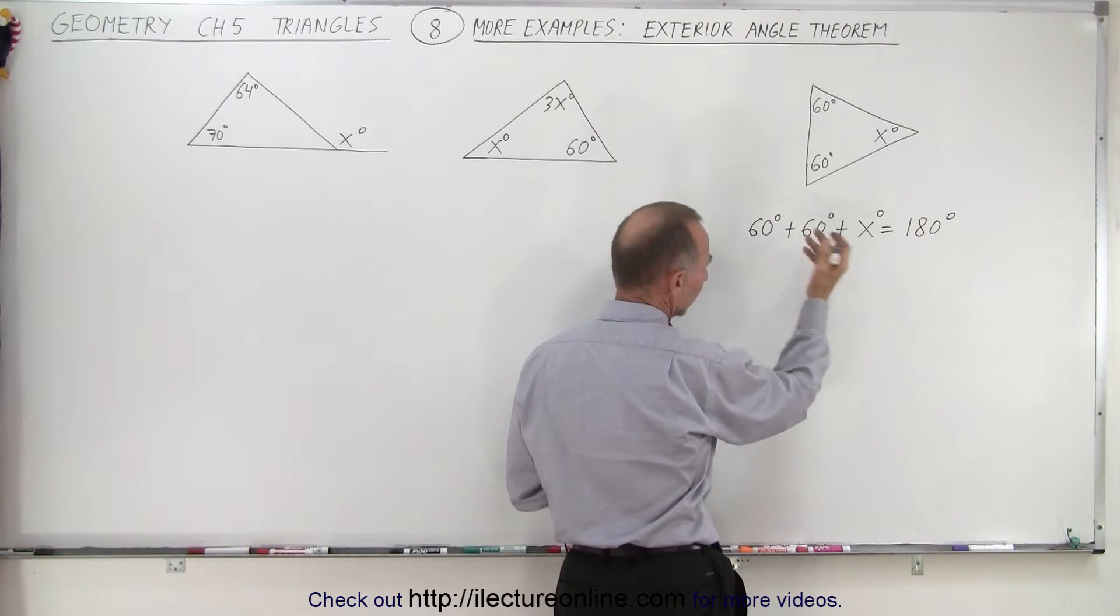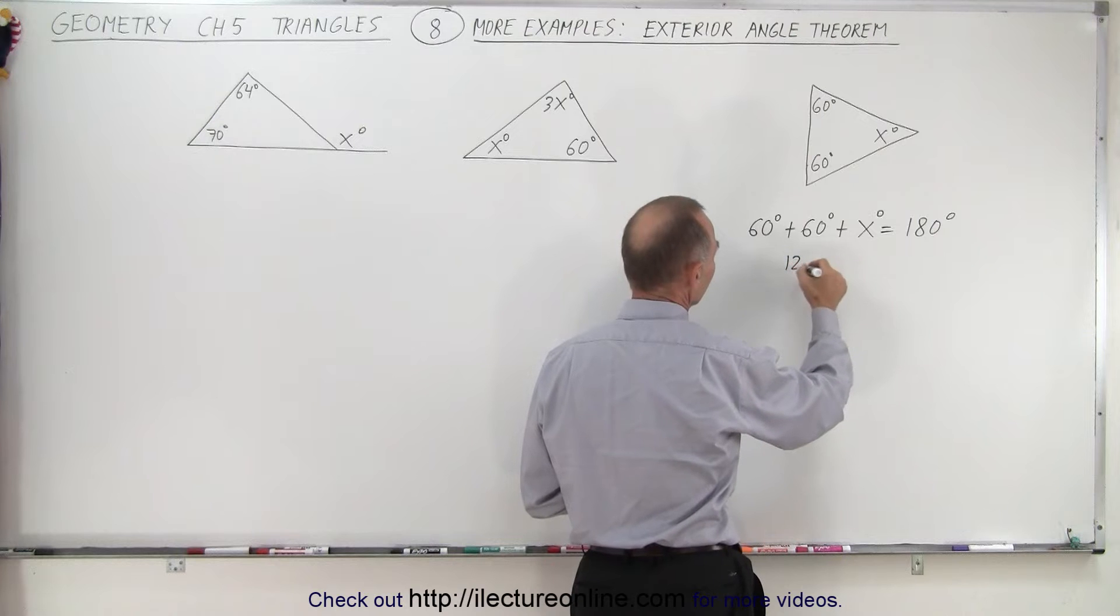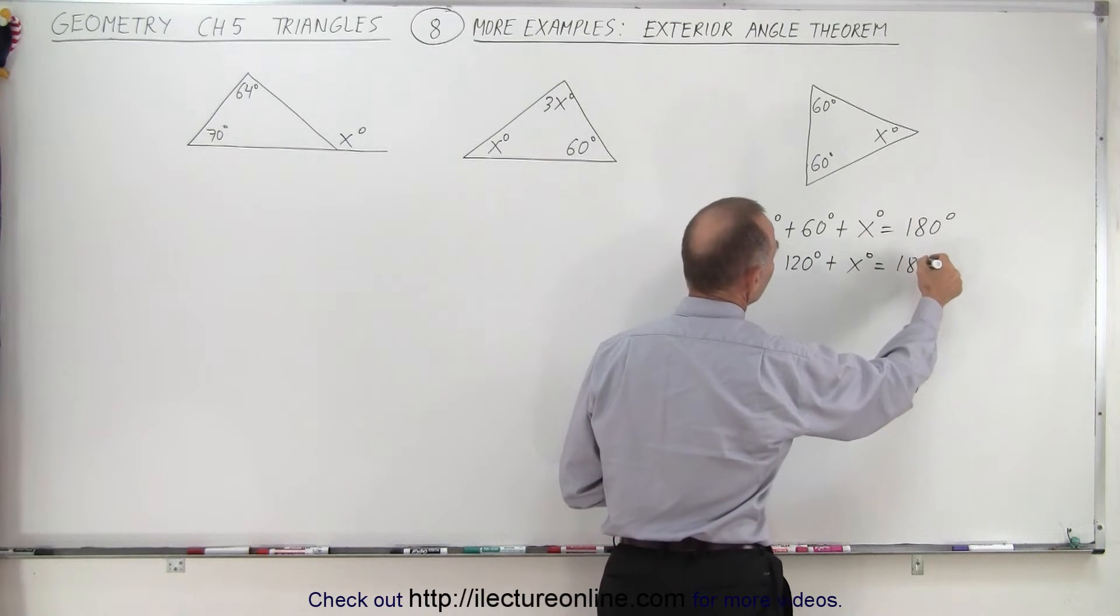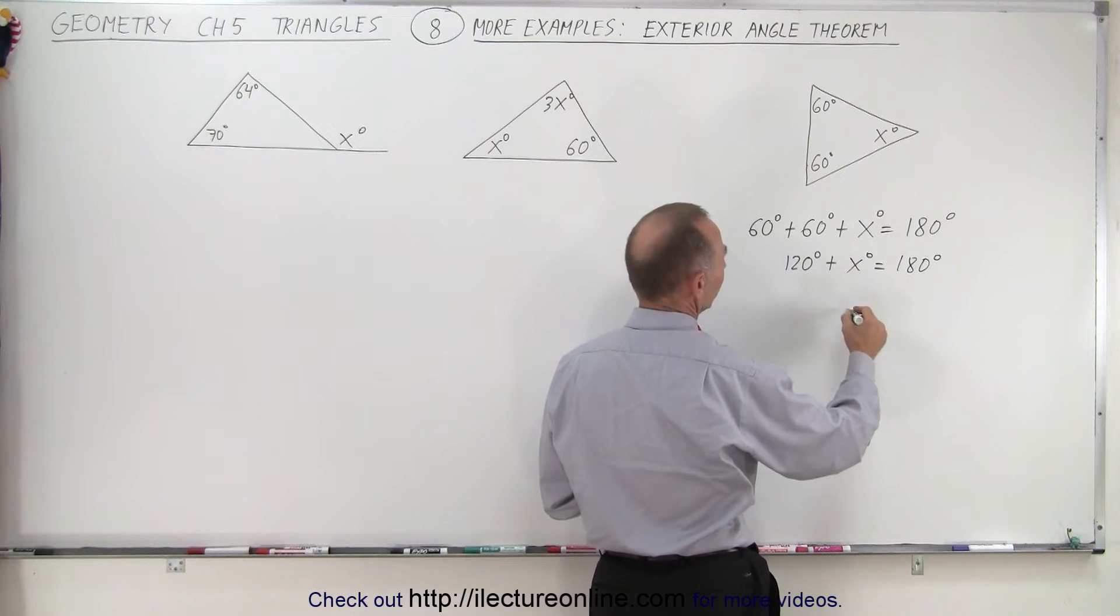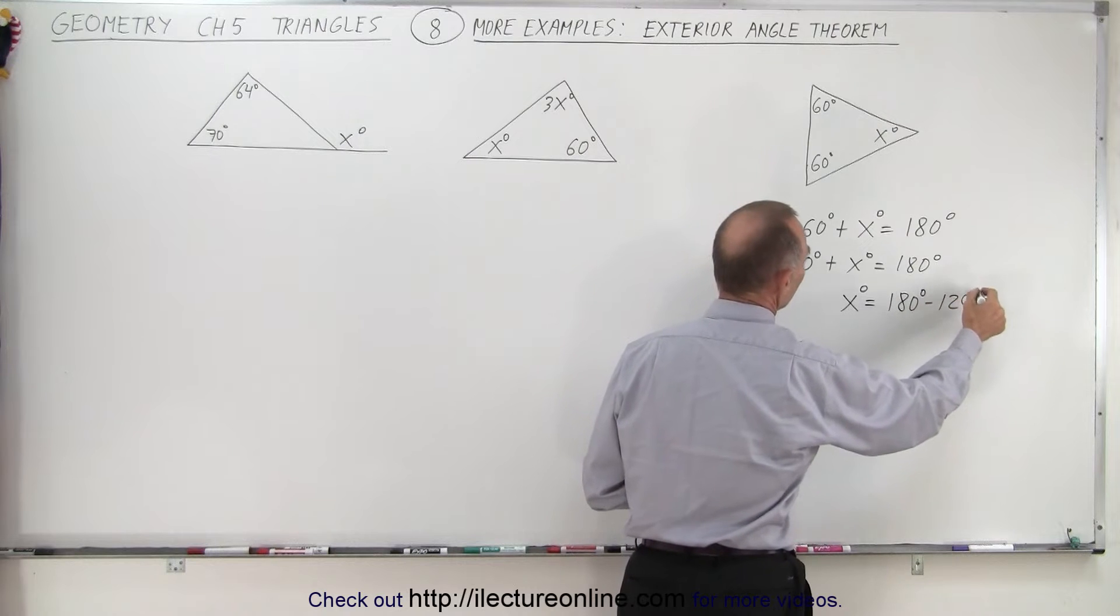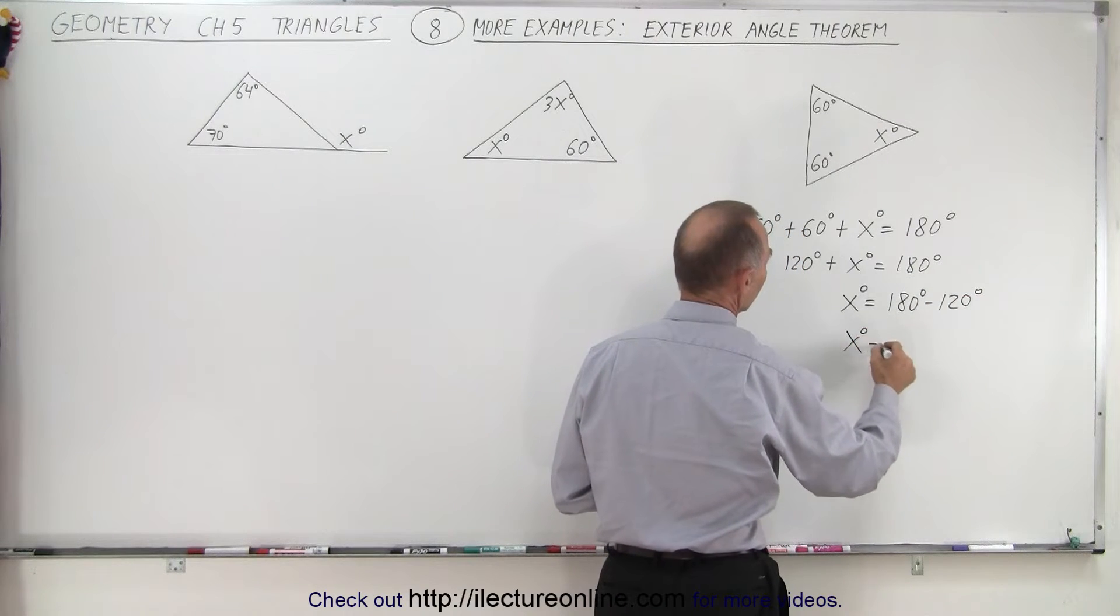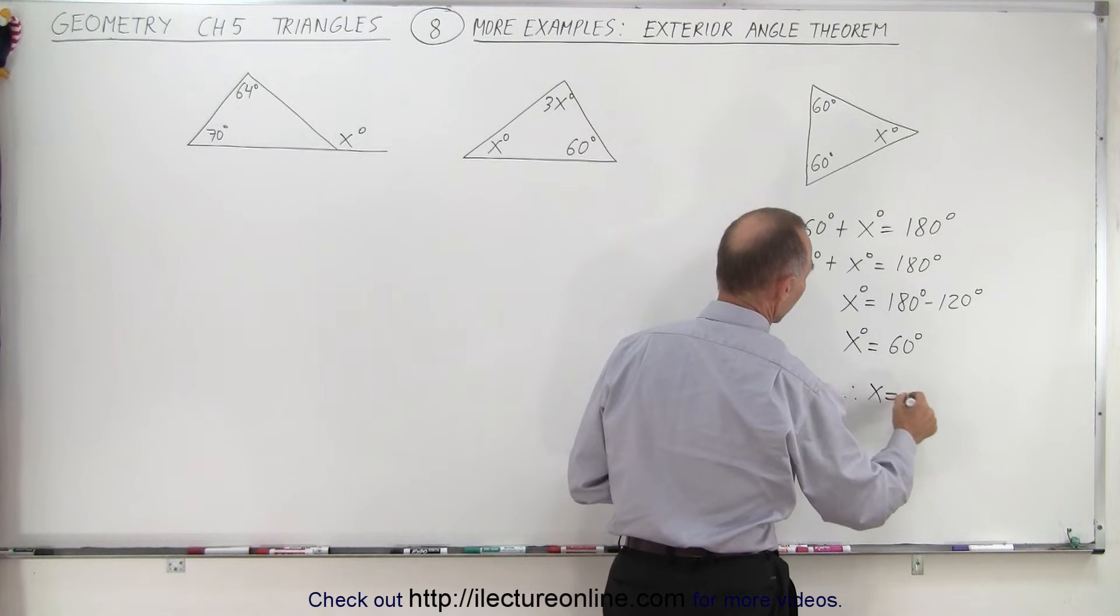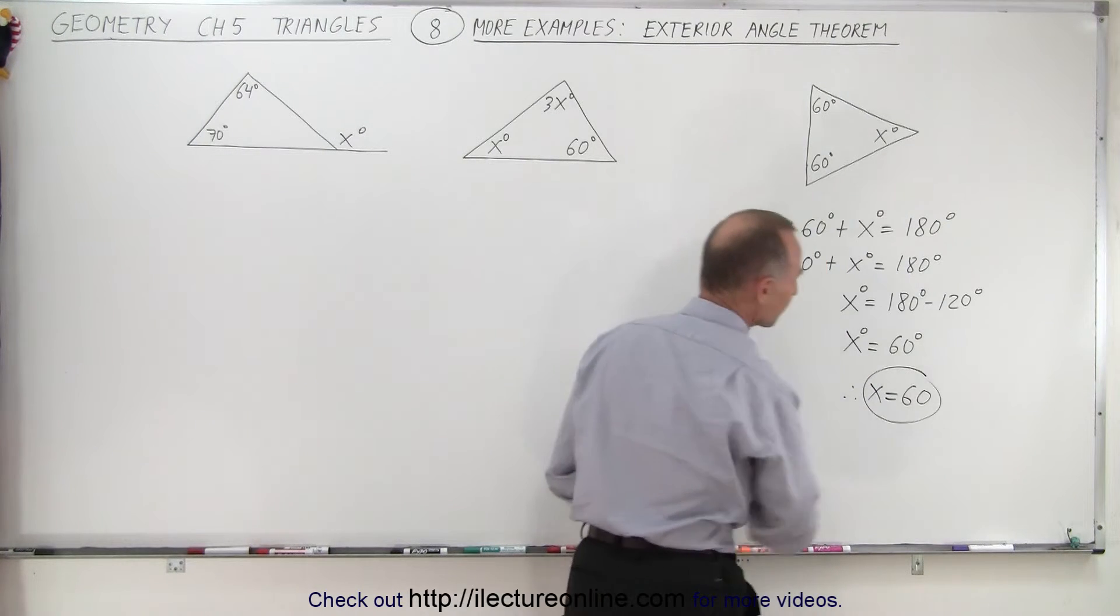So if we subtract—well, we can first add these two. So we can say 120 degrees plus x degrees equals 180 degrees. Subtract 120 from both sides. x degrees equals 180 degrees minus 120 degrees, or x degrees equals 60 degrees. In other words, x equals 60.